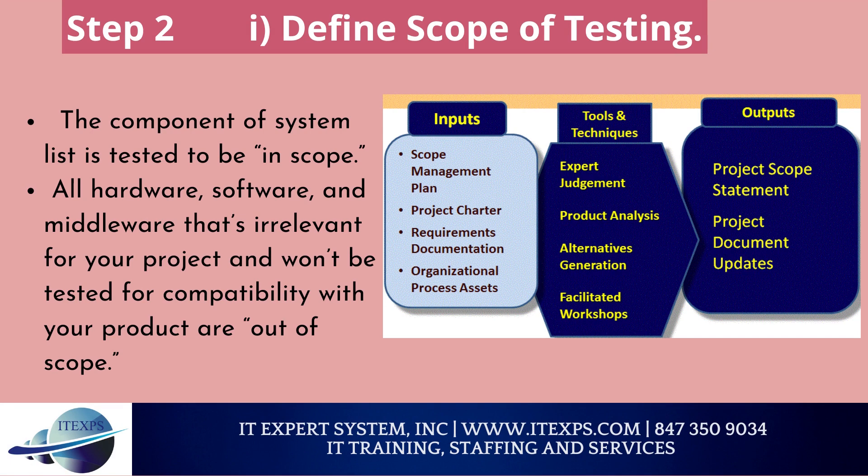First, define the scope of testing. The QA team should create a list of all the hardware, software, and middleware you want your product to be compatible with. The components of the system list that are tested are considered in scope. All hardware, software, and middleware that is irrelevant for your project and won't be tested for compatibility are out of scope.